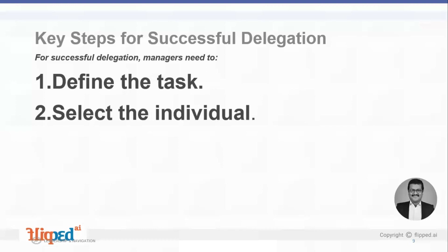The second step is to select the individual. What are the reasons for selecting this employee? As part of the selection process, determine how both the employee and the organization will benefit. Why was this person chosen over others? Whether the person selected is the right person — right person, right job, right time — so that both the individual and the organization benefit.